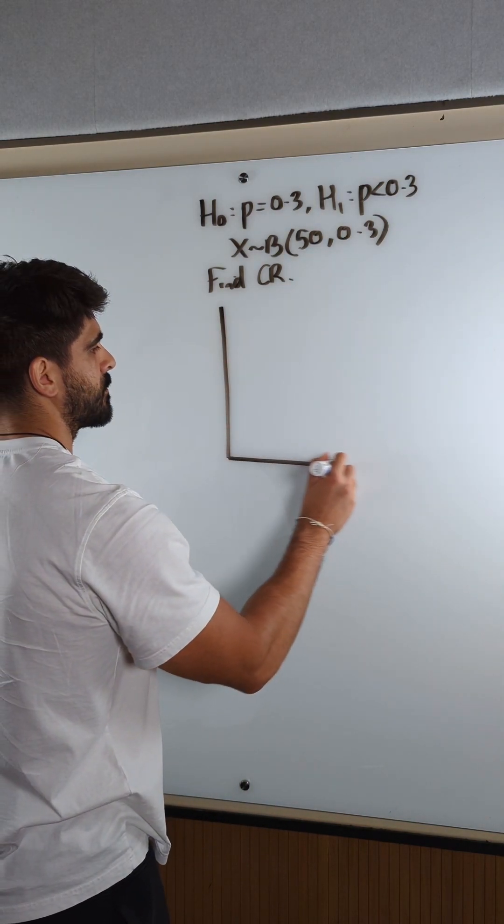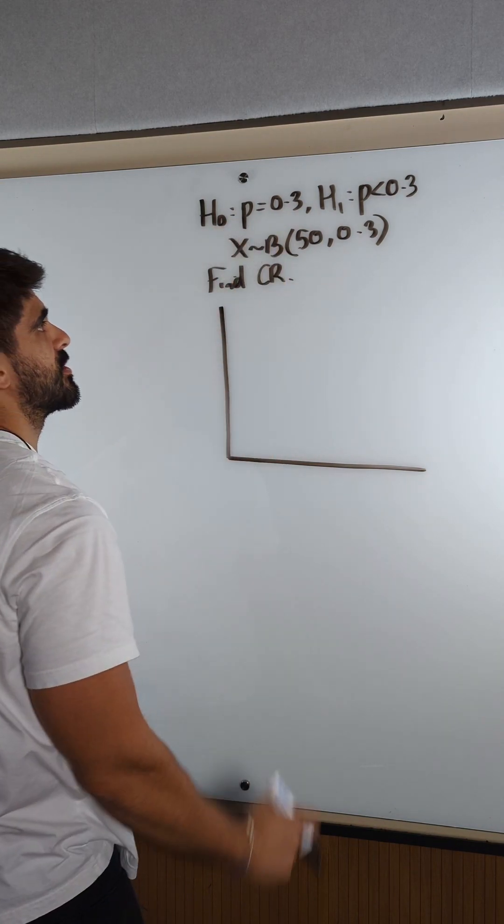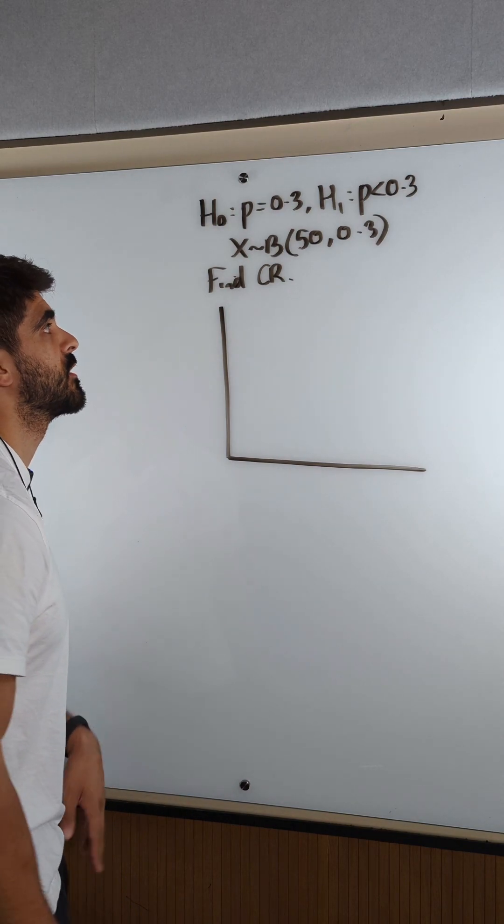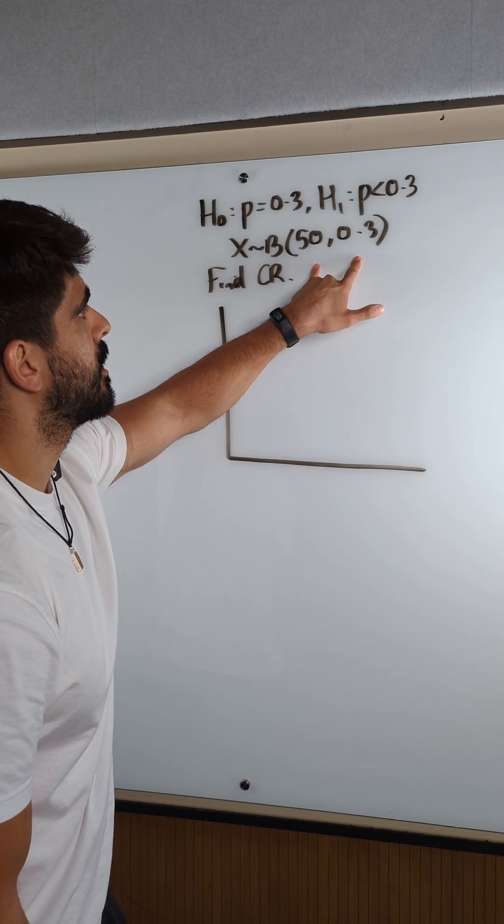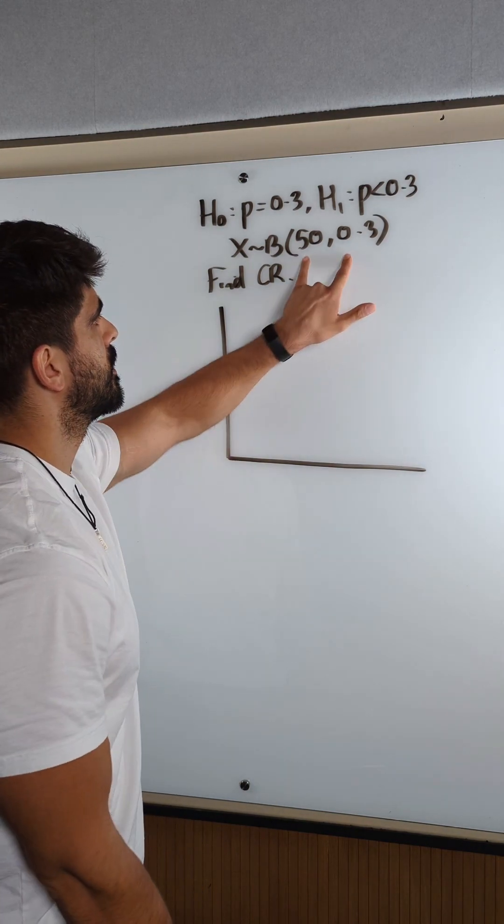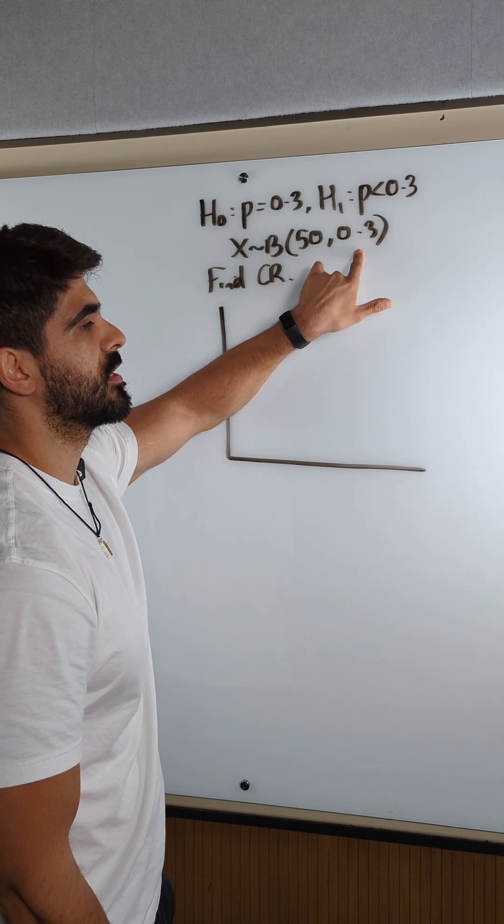We just draw a diagram of a binomial distribution. We're testing the probability being 0.3; someone has claimed that the probability is actually less than 0.3. So if this is our distribution, which outcome would have the highest probability? Well, the average - you do NP. 50 times 0.3 is 15.